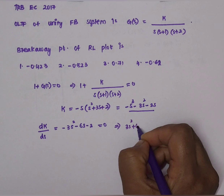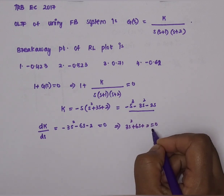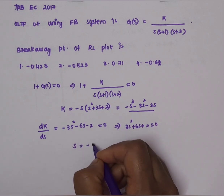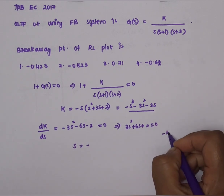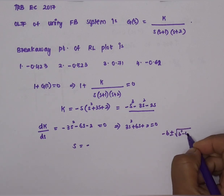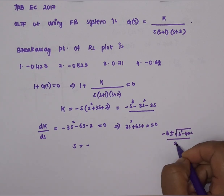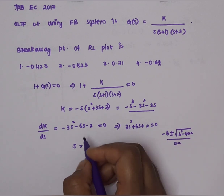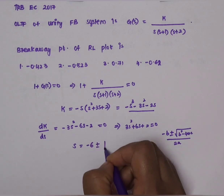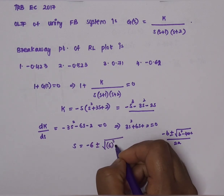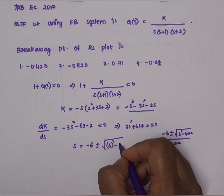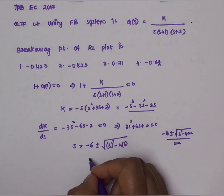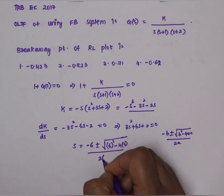Rewriting: 3s² + 6s + 2 = 0. Applying the quadratic formula: s = (-b ± √(b² - 4ac)) / 2a, where a = 3, b = 6, c = 2. Substituting: s = (-6 ± √(6² - 4·3·2)) / (2·3) = (-6 ± √(36 - 24)) / 6.